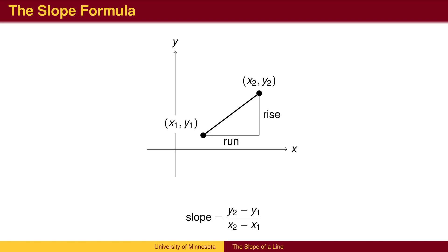In general, the slope between two arbitrary points is given by the slope formula. Y coordinates are subtracted in the numerator. X coordinates are subtracted in the same order in the denominator.